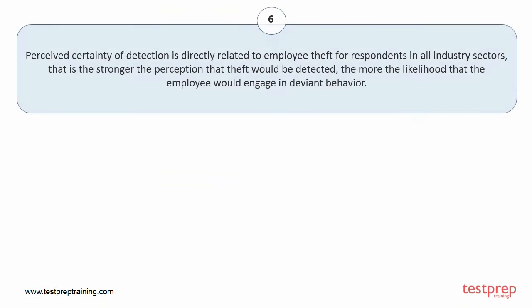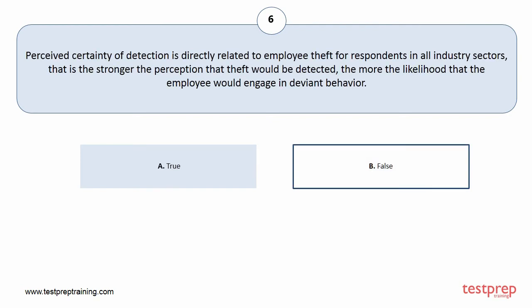Question number 6. Perceived certainty of detection is directly related to employee theft for respondents in all industry sectors. That is, the stronger the perception that theft would be detected, the more the likelihood that the employee would engage in deviant behavior. Your options are A. True, B. False. The correct answer is option B.